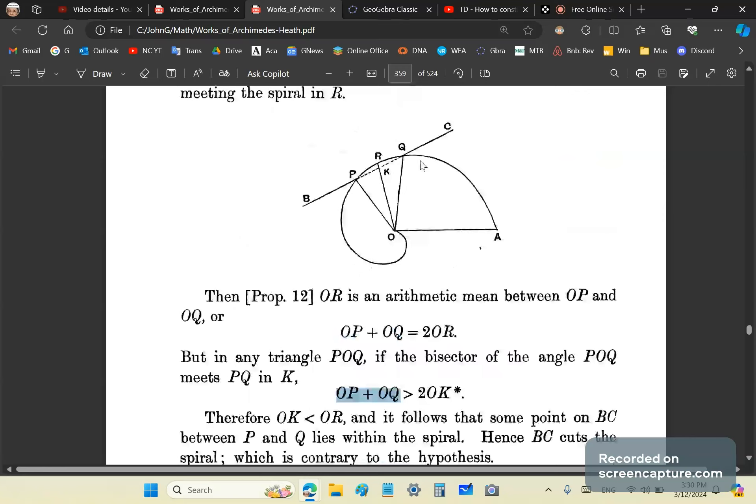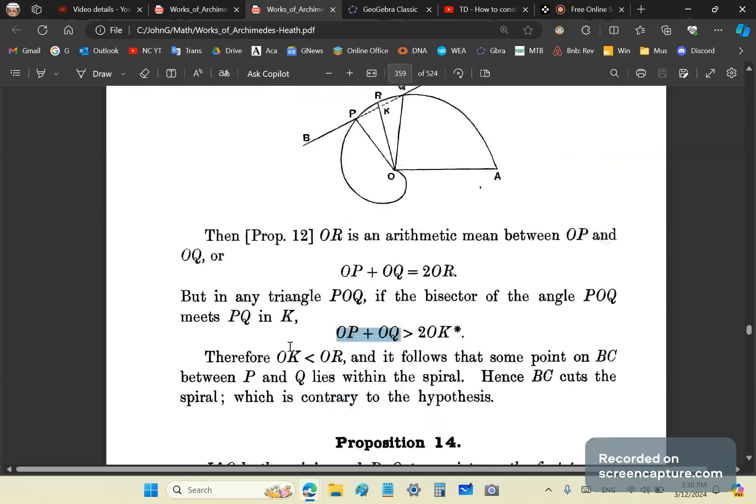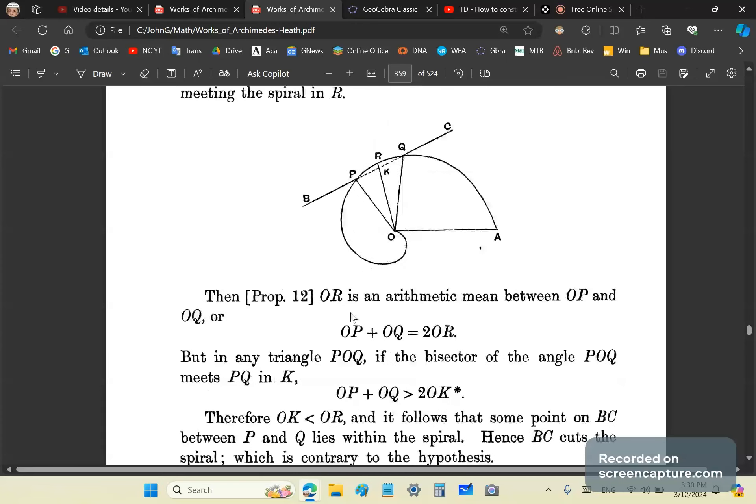Now the only way this is possible is if, for example, we had a chord on the spiral that is parallel to the tangent BC. You have to think of this in terms of the way the ancient Greeks thought about it. What does it mean to say that OR is an arithmetic mean? It means that if you had to add all those rays from OP to OQ and find their arithmetic mean, it would be OR. Why? Because the angle is bisected.